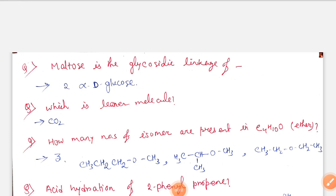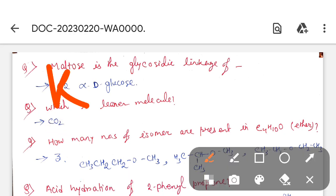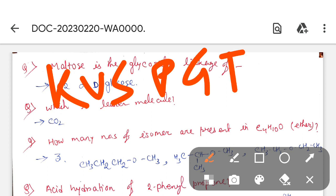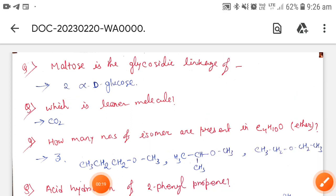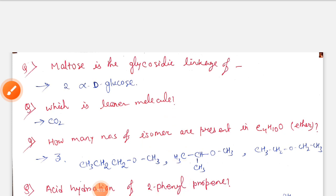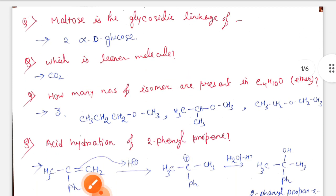Hello friends, welcome back to my channel. Today we will discuss all the chemistry questions, KVS PGT chemistry questions. Memory-based questions are given here. Let's see. At first, maltose is the glycosidic linkage of - here the correct option is option 2, alpha-D glucose. Two units of alpha-D glucose.